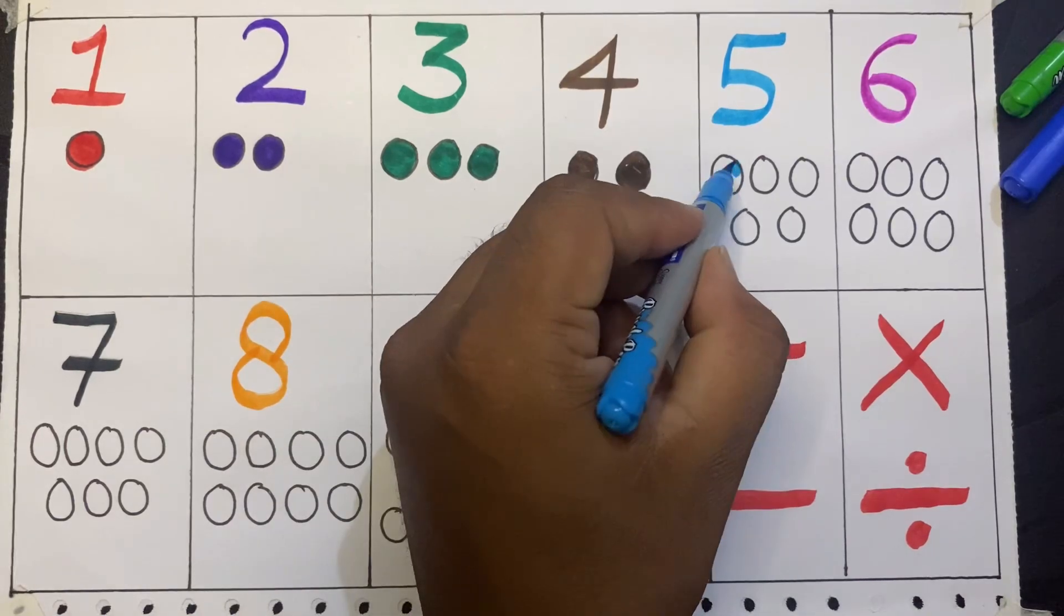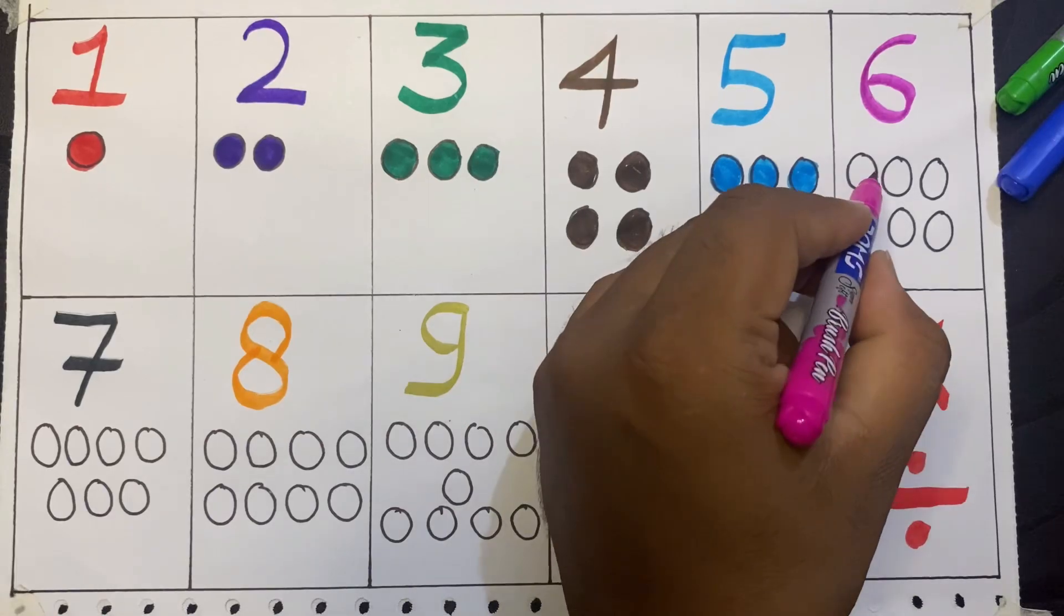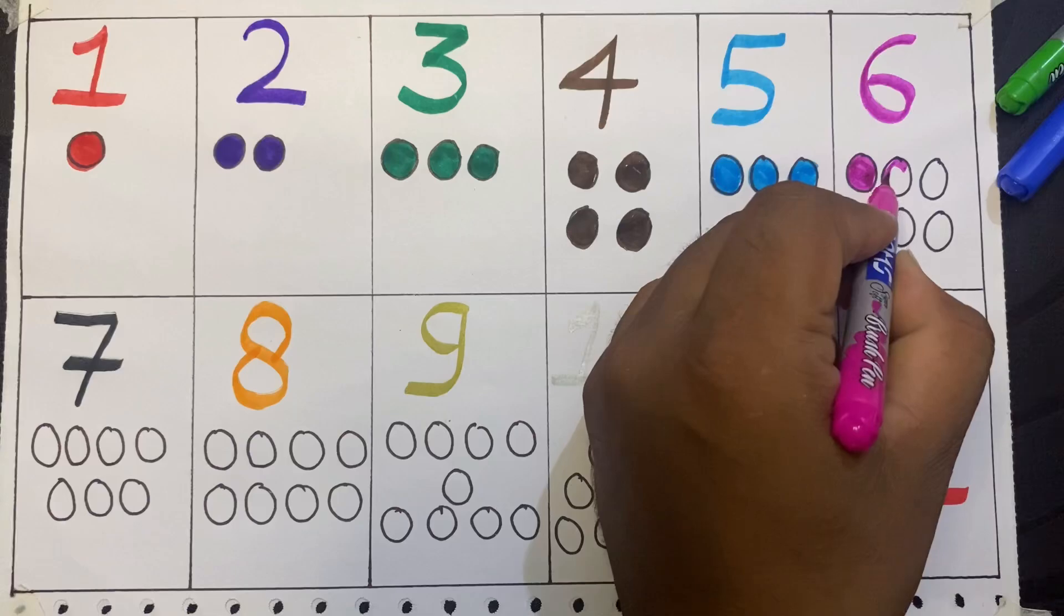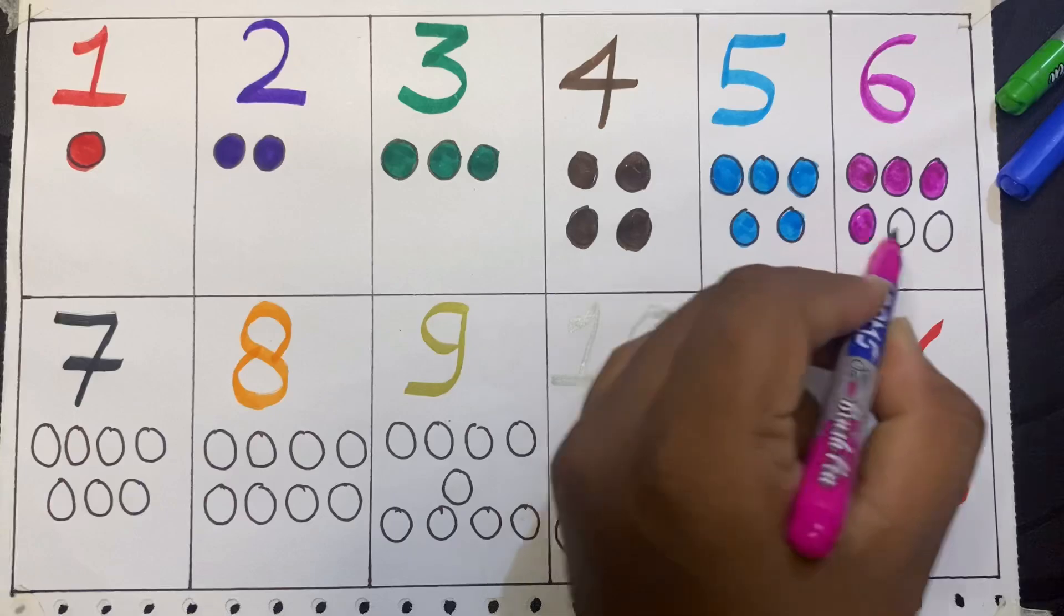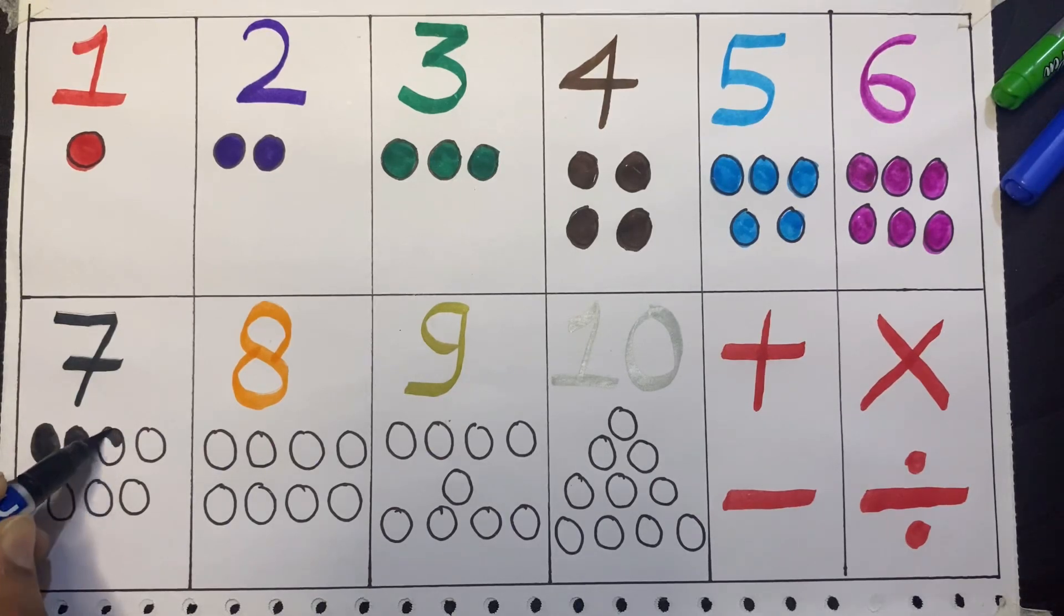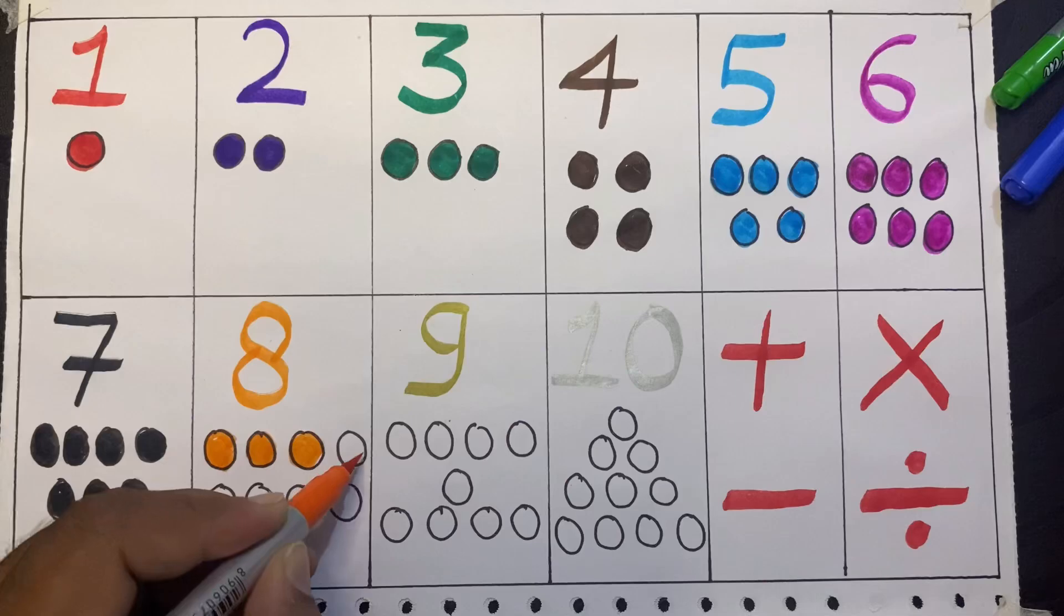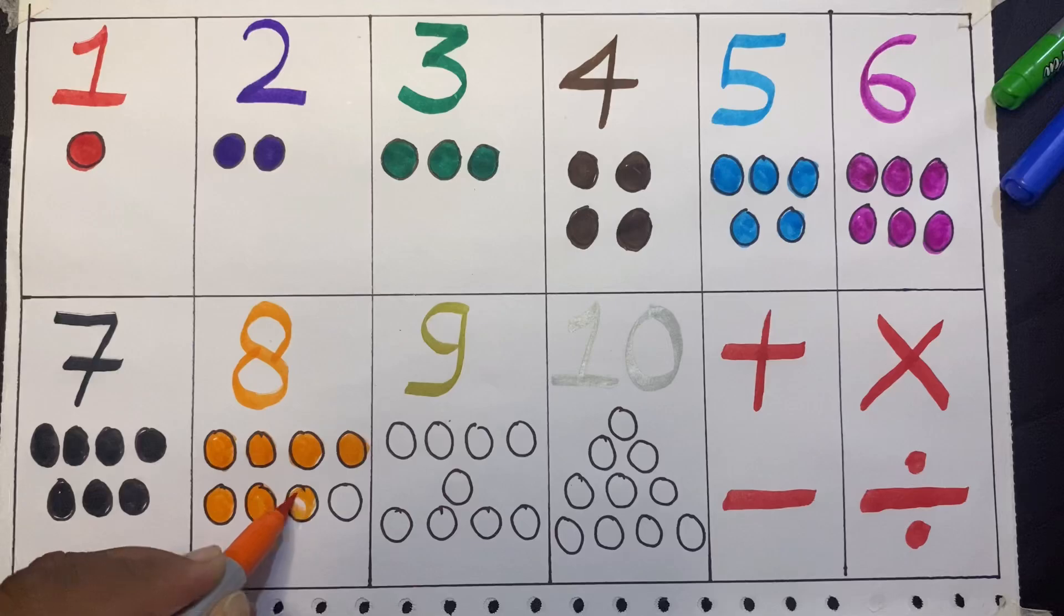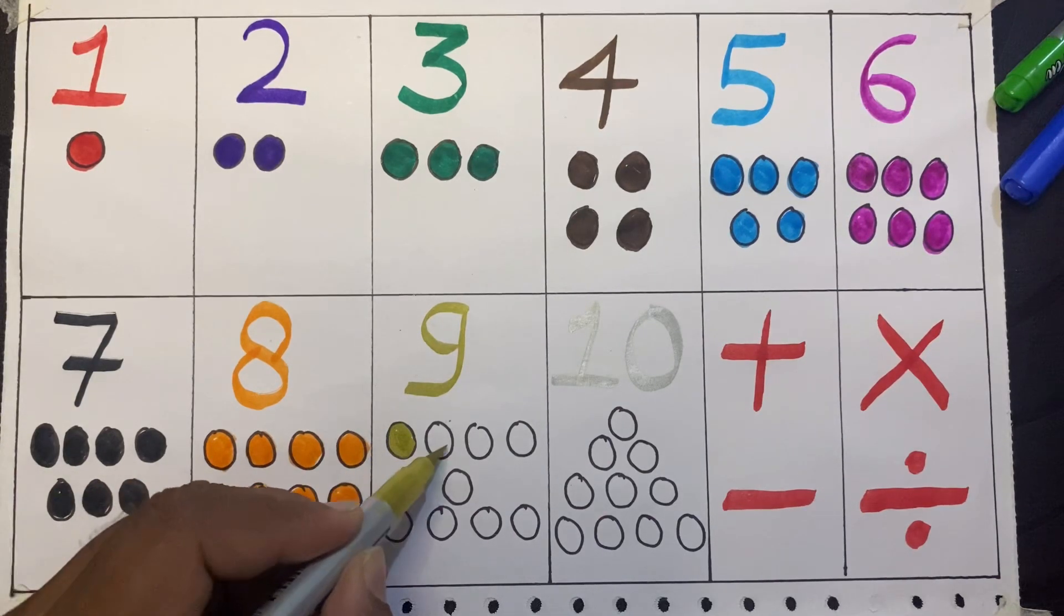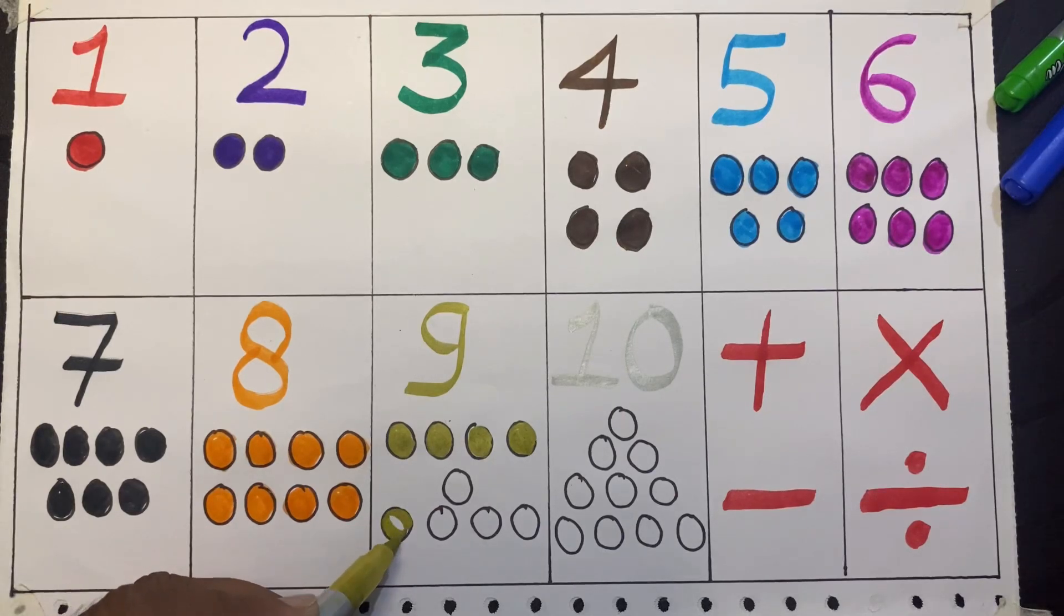4 brown circles. 1, 2, 3, 4, 5 - 5 sky blue circles. 1, 2, 3, 4, 5, 6 - 6 pink circles. 1, 2, 3, 4, 5, 6, 7 - 7 black circles. 1, 2, 3, 4, 5, 6, 7, 8 - 8 orange circles.